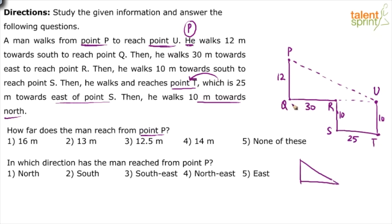If you see, between point P and point U, the horizontal distance is 30 plus 25. This would be 25. So 30 plus 25 is 55. And the vertical distance is 12. The vertical distance here is 12. This 10 to the south and 10 to the north gets cancelled. So this is 12. So 12 and 55.